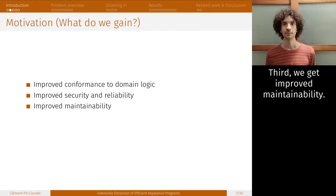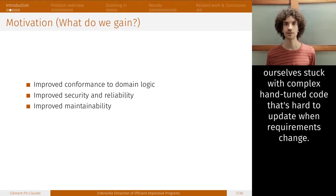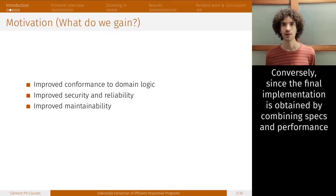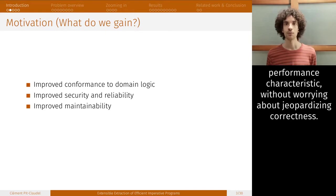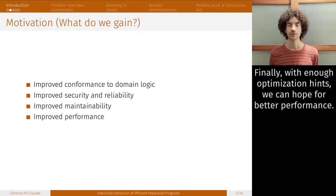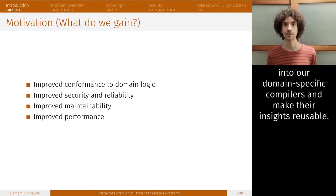Second, we get improved security and reliability. Our proofs guarantee that optimizations cannot introduce unexpected behaviors. Third, we get improved maintainability. Because we separate functionality and performance constraints, we have much lower risks of finding ourselves stuck with complex hand-tuned code. Finally, with enough optimization hints, we can hope for better performance. Instead of relying on experts to tune individual programs, we can embed the experts' knowledge into our domain-specific compilers and make their insights reusable.